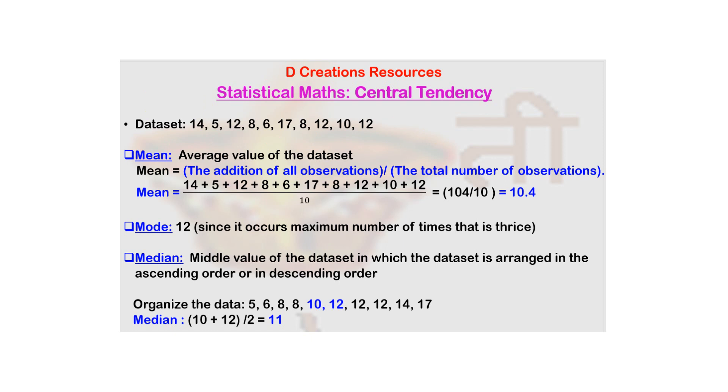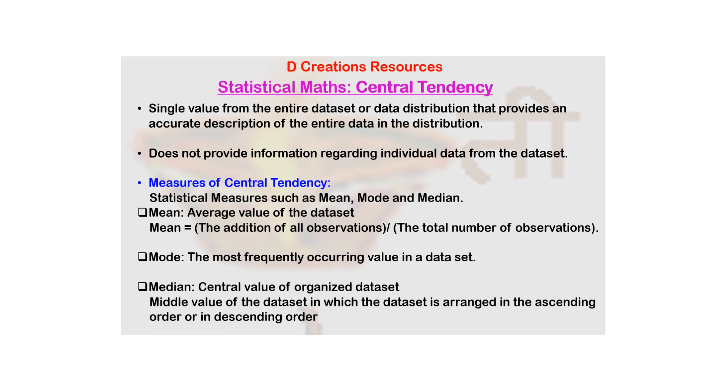And it is not just a number, it is a number which tells you something about the data. Remember this definition, we will come back to this. So the idea is it is not going to provide any information regarding individual data from the data set. It talks about the entire set. So it's a single value. Remember the key points: it's a single value associated with the data set and it provides information about the entire data set.